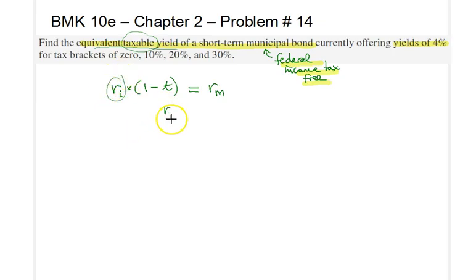One thing you can do is you can isolate the r sub I here. It would basically yield r sub M divided by 1 minus T. Now we can go ahead and solve the problem for the four cases given.